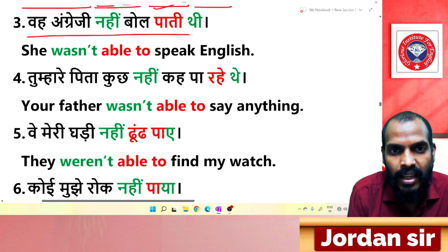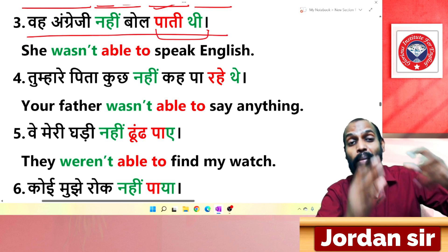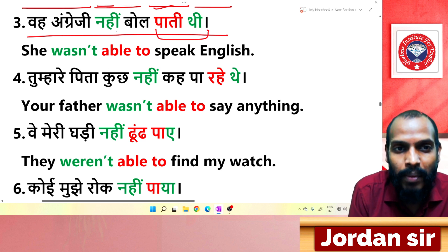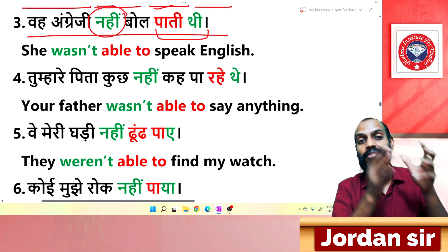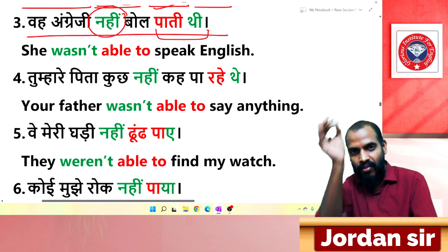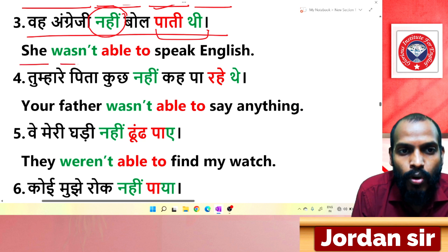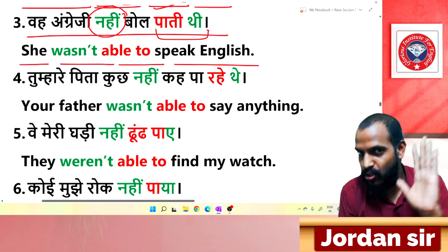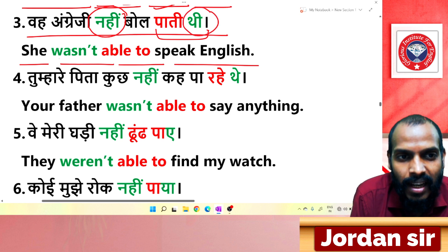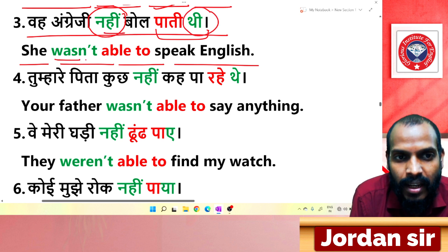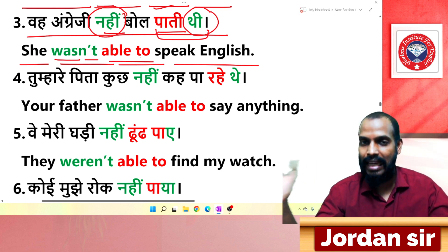Next: 'वह अंग्रेजी नहीं बोल पाती थी.' The ending 'पाती थी' indicates a past habit, and 'नहीं' makes it negative. From 'थी' we get 'was', from 'नहीं/पाती' we get 'not + able to'. Translation: 'She wasn't able to speak English.'